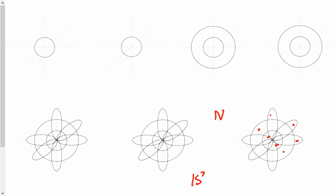It'll be 1s2, arrow up down, 2s2, arrow up down, and then 2p3.